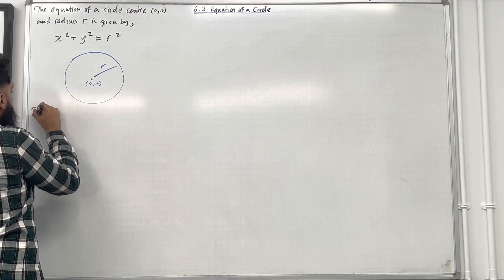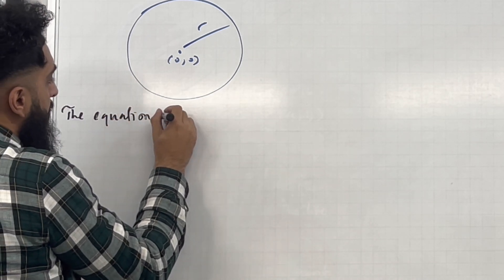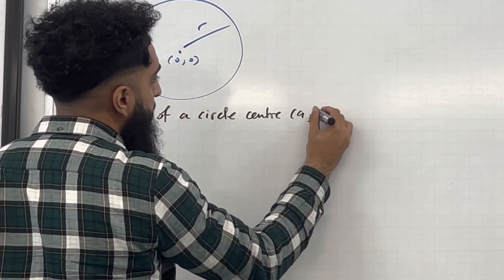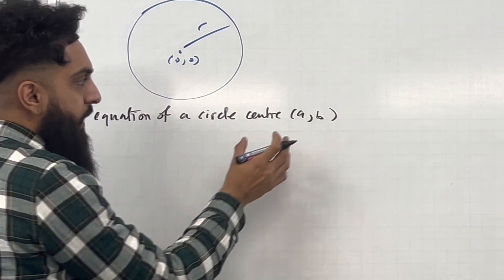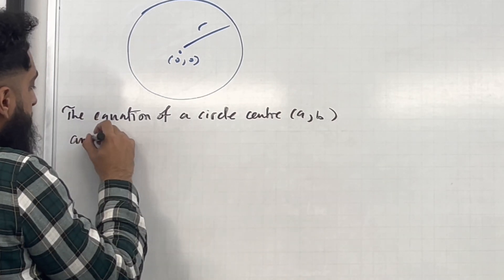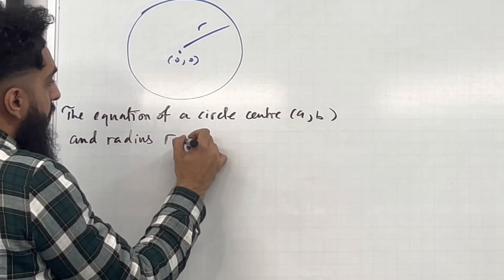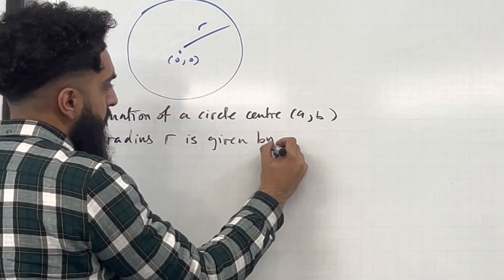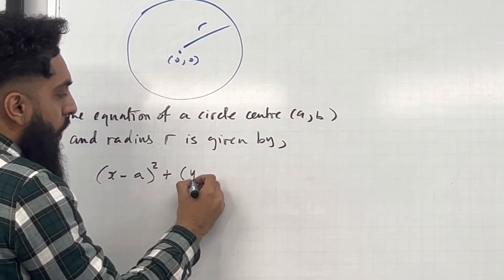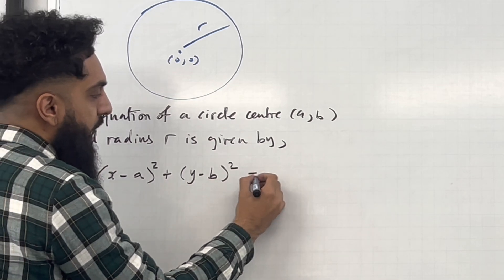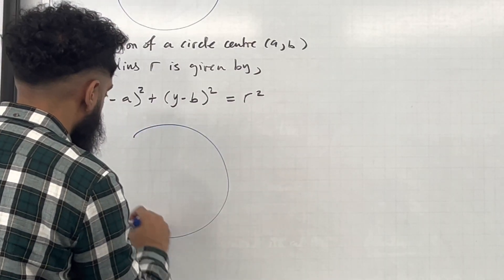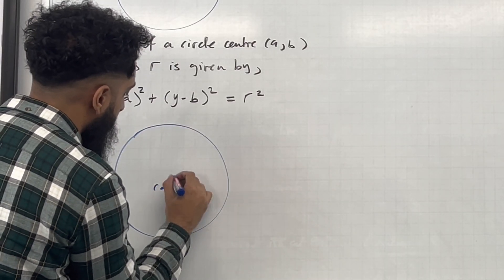Next statement. The equation of a circle with centre (a, b), where a and b are constants — this coordinate (a, b) is any general coordinate — and radius R is given by: open bracket x minus a close bracket squared plus open bracket y minus b close bracket squared equal R squared. Here is a diagram: a circle centred at (a, b) with radius R.